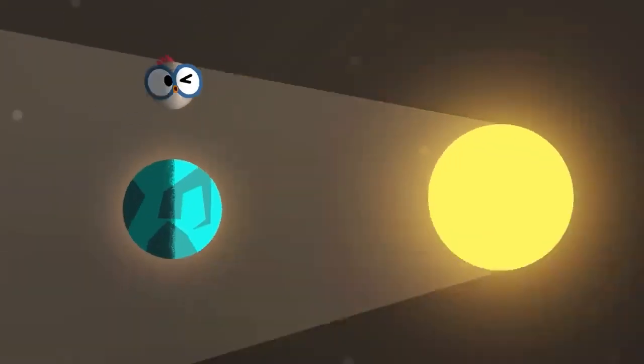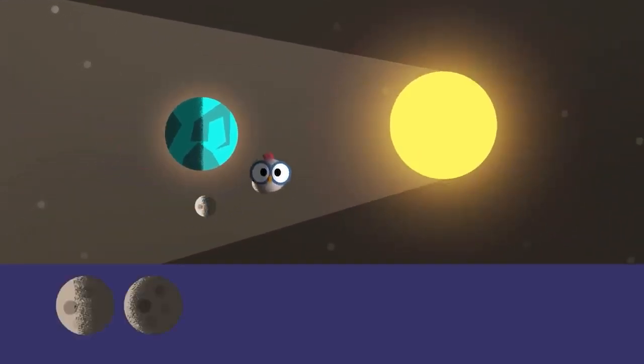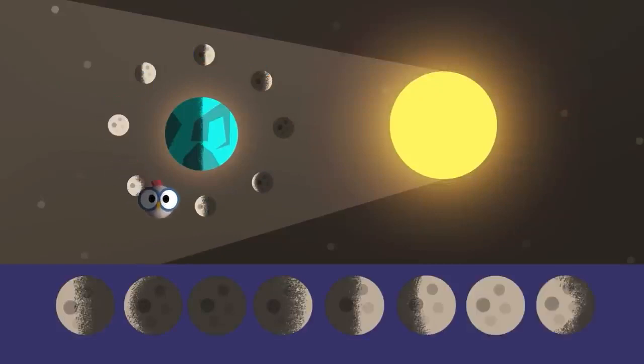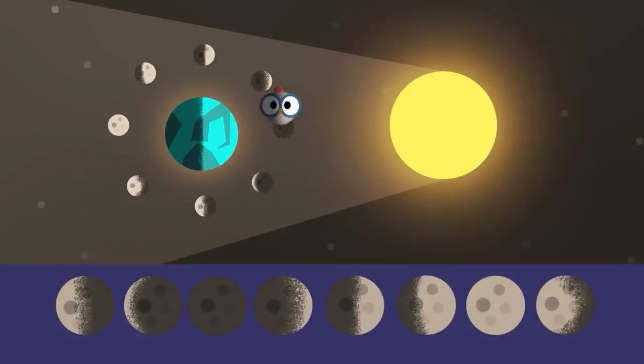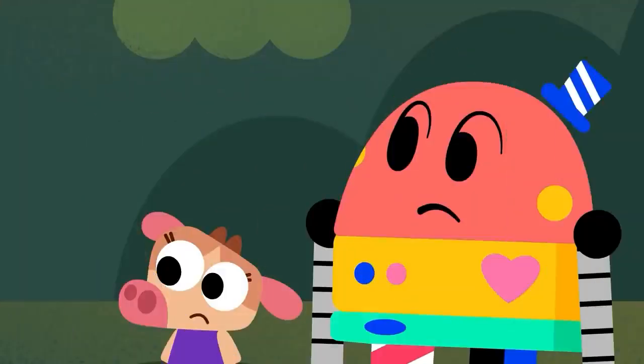We only see part of the moon where the sun shines, depending on where it is in relation to Earth at any given time. That's why sometimes it looks like it's missing a piece. No one is eating the moon. It's just a shadow. Does that make sense?